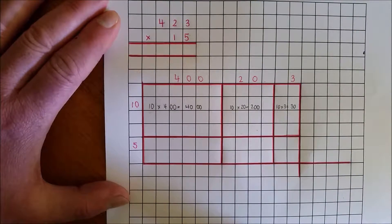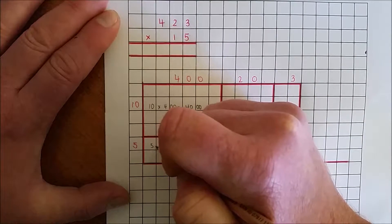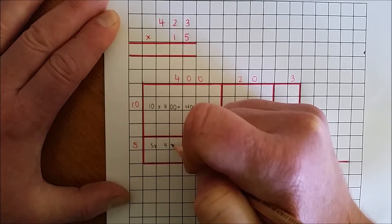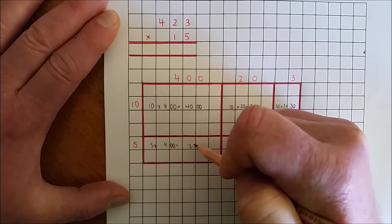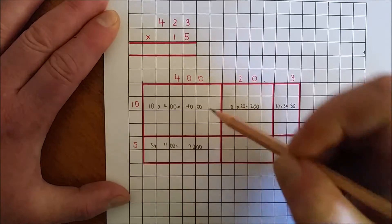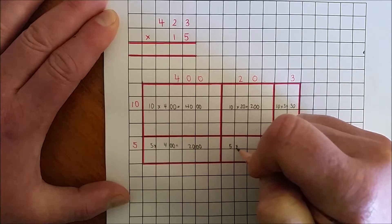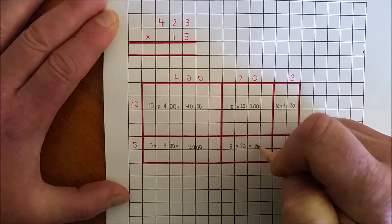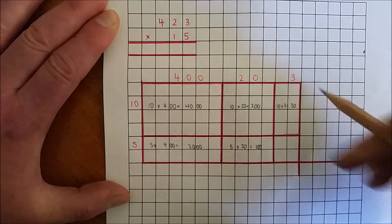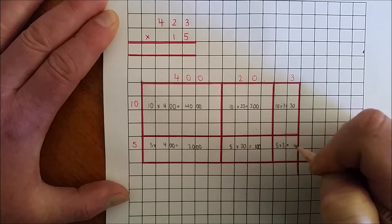Now I multiply by the ones. I am going to record each multiplication factor and answer in turn. 5 400s is 2,000. 5 20s is 100. 5 3s are 15.